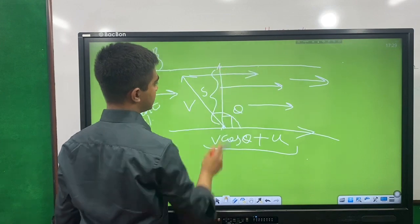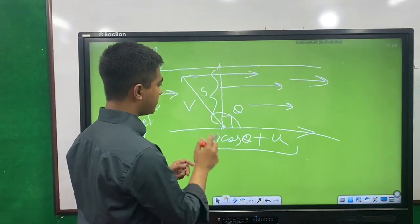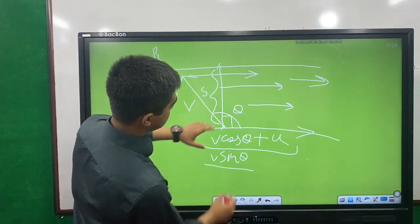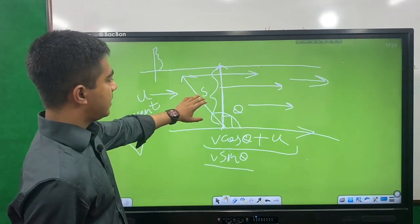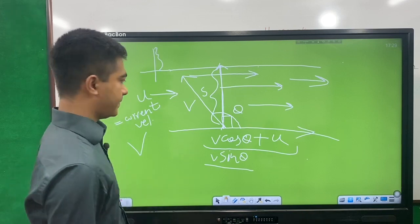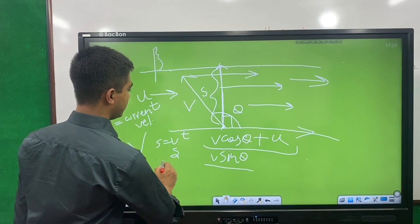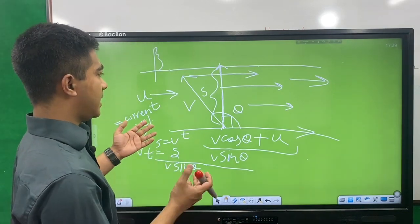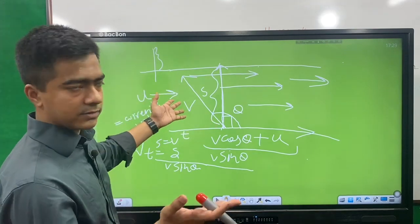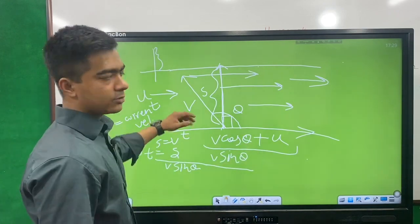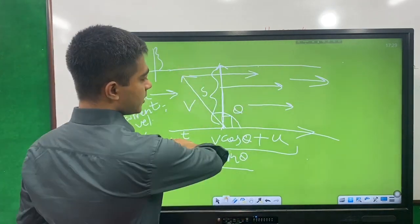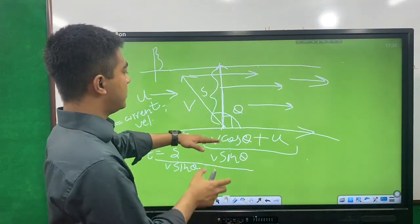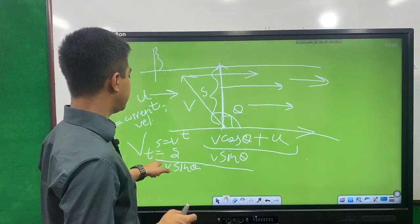In general, we apply V sin θ for the perpendicular component. V sin θ means the component perpendicular to the current. We have S equals Vt, T equals S by V. The y-axis component is V sin θ. So time T equals S divided by V sin θ.